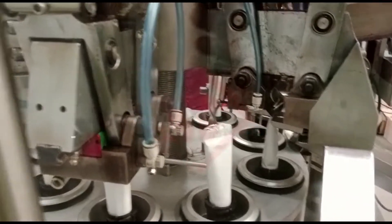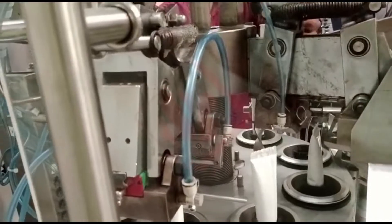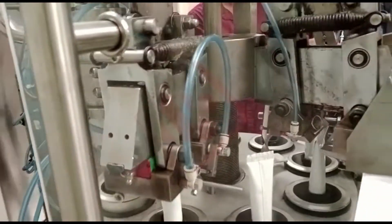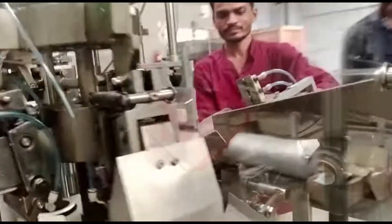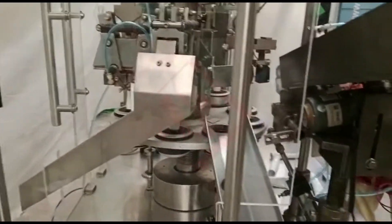Control Panel: The machine is typically operated through a control panel, which allows the user to set parameters such as filling volume, sealing time, and other variables. It also provides monitoring and adjustment functions to ensure efficient operation.